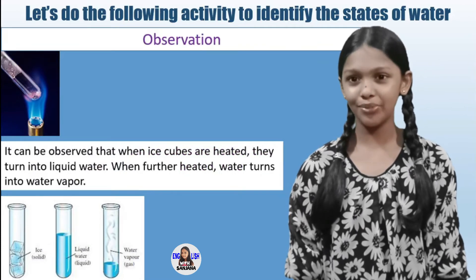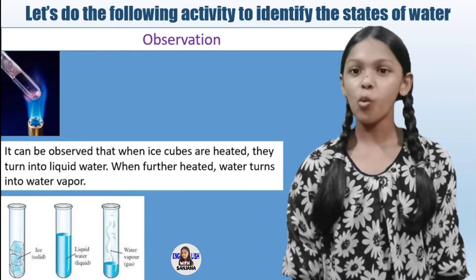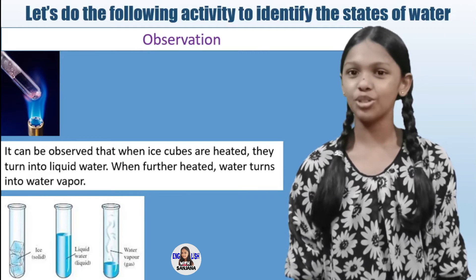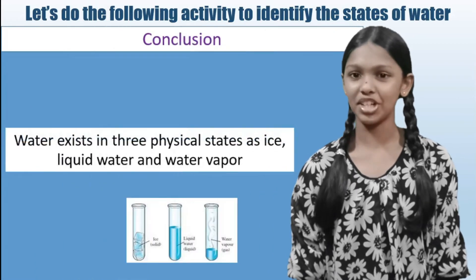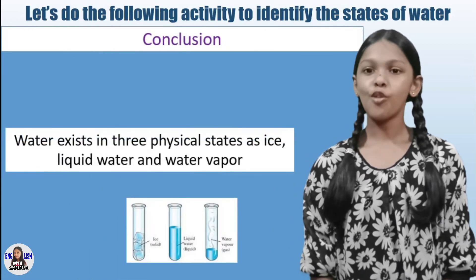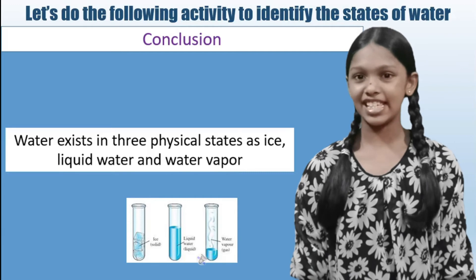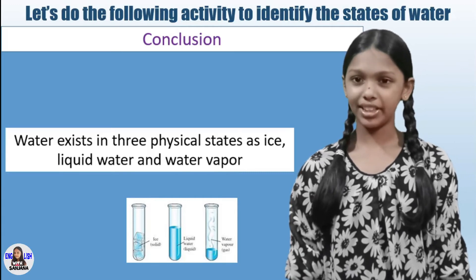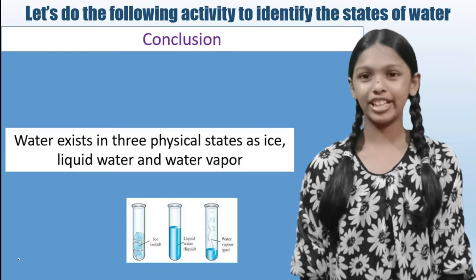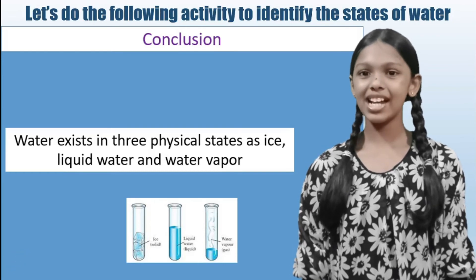Observation: it can be observed that when ice cubes are heated, they turn into liquid water. When further heated, water turns into water vapor. Conclusion: water exists in three physical states — ice, liquid water, and water vapor.